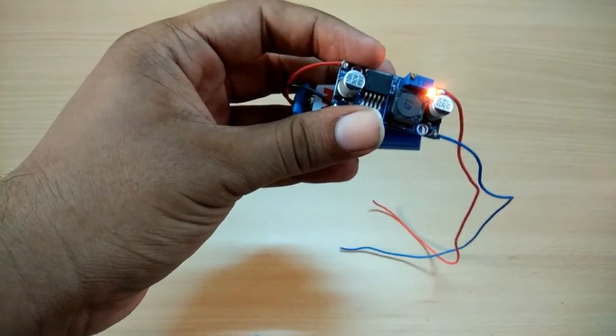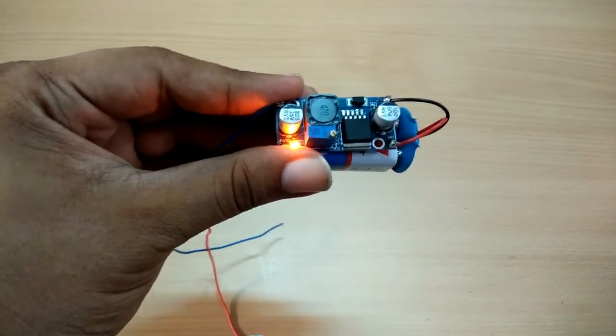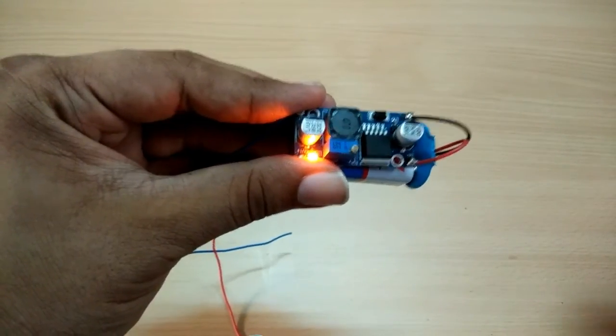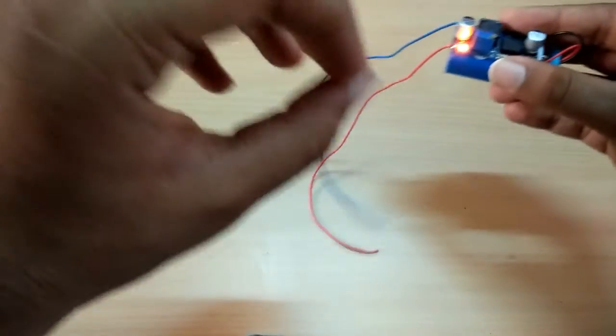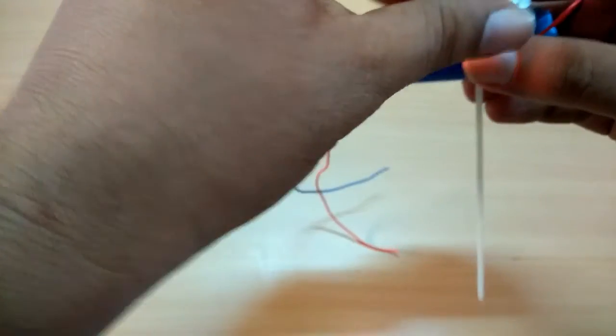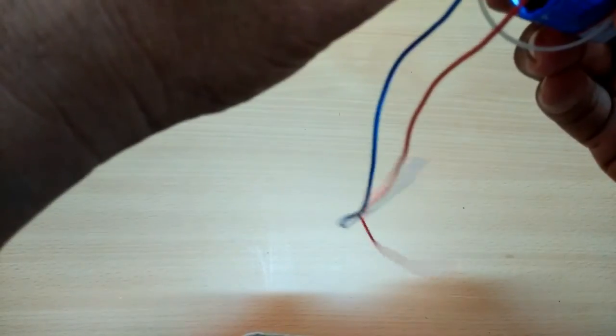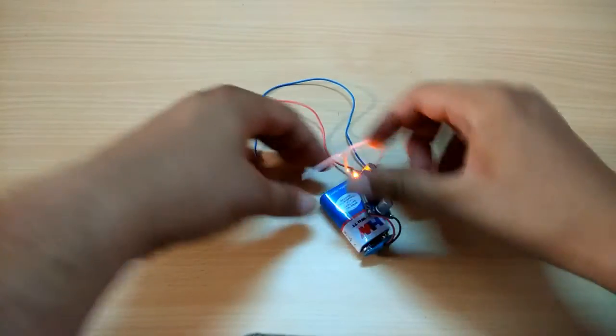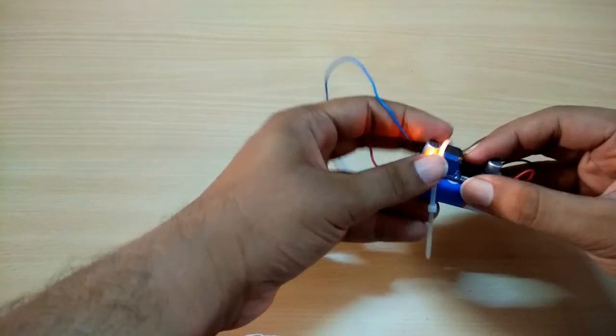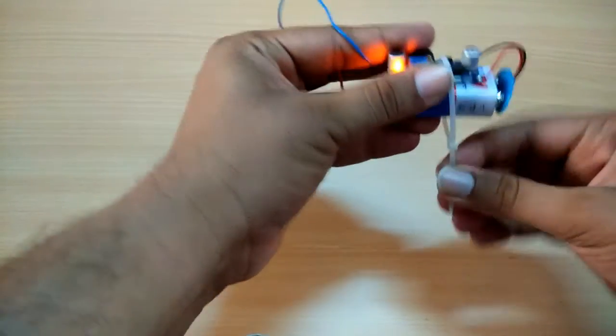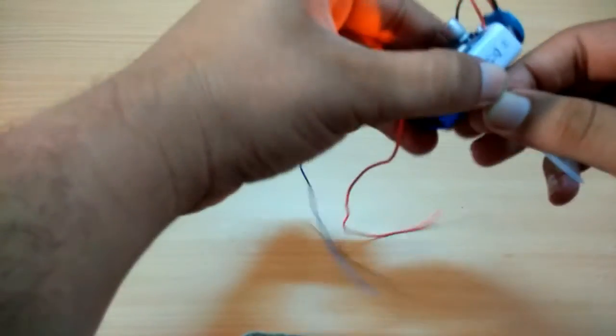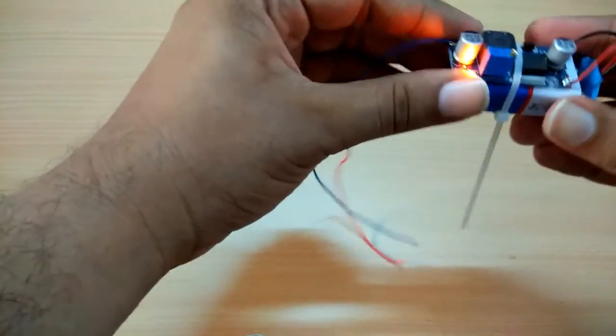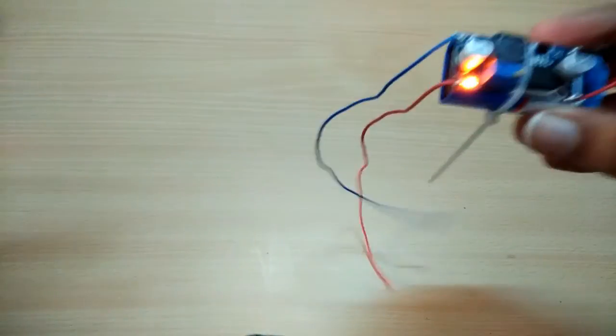Now let us test the voltage output. Before that, secure the circuit and the battery with some zip ties like this. Now the circuit is secured with the battery.